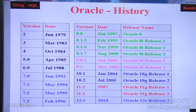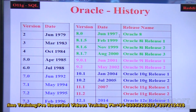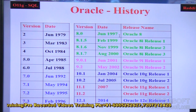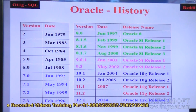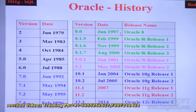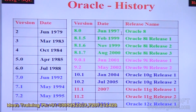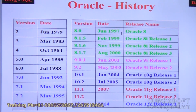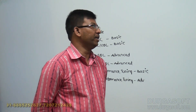Next, version 3 in 1983, version 4 in 1984, version 5 in 1985, version 6 in 1988, version 7 in 1992, version 8 in 1997, 8i in 1999, 9i in 2001, 10g in 2004, 11g in 2007, and 12c which is the latest one in 2014. These are the different versions of Oracle in our database.